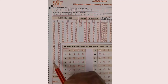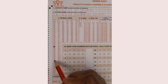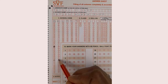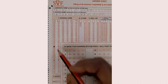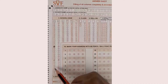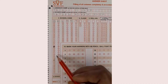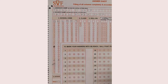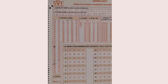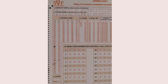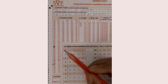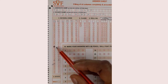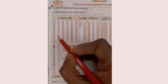The circle should be dark. It should not be that you are doing it in two places — that would be incorrect. It should be one line only, properly done, and it should not be going outside the bubble. Because this is an OMR sheet, the machine will not be able to detect your correct answer if it's not filled properly.